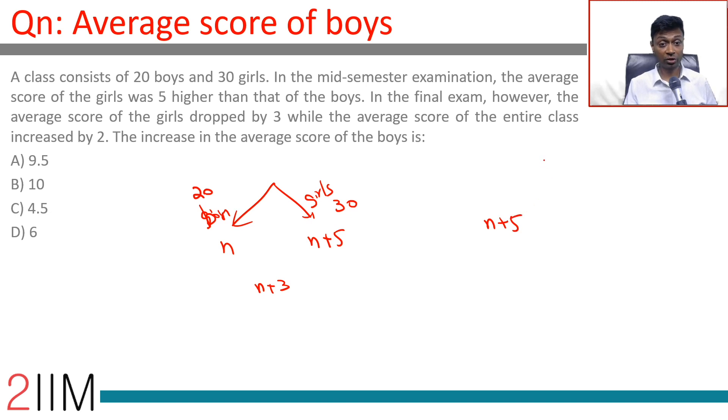Average score of the girls dropped by 3, so the girls would have gone to n plus 2 from n plus 5. Now what will be the increase in the average score of the boys? N plus 2 and something would have resulted in n plus 5.